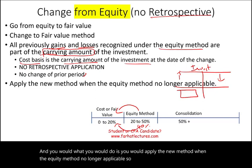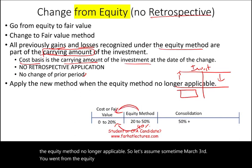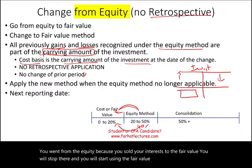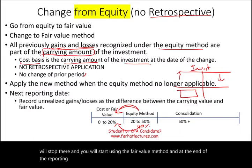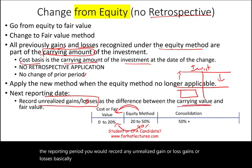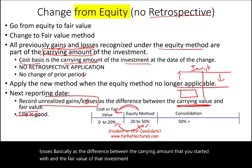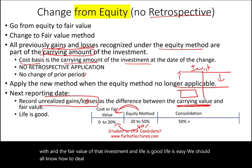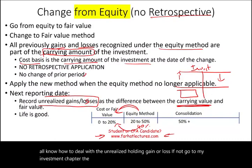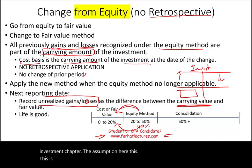Let's assume on March 3rd you went from equity to fair value because you sold your interest. You stop there and start using the fair value method. At the end of the reporting period, you record any unrealized gain or loss as the difference between the carrying amount you started with and the fair value of that investment. We should all know how to deal with unrealized holding gain or loss. If not, go to the investment chapter. This is an advanced topic.